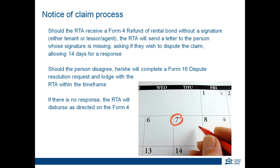The notice of claim process: if the tenant or a lessor agent has sent a refund form to the RTA without the other person's signature, we will write to them and ask whether they wish to dispute the claim. The timeframe allowed for their response is currently 14 days. It is important to make sure the RTA has your current address, email and phone details, so if you move or your staff changes, ensure the RTA is always informed. If you do not know the tenant's forwarding address but have a phone number or email, put those details on the form. If the person disagrees, they will need to complete a Form 16, a dispute resolution request, and lodge that with the RTA within the notice of claim timeframe. Once we receive the form, the RTA will continue to hold the bond until the matter is resolved or an order is made from the Tribunal. If there is no response, the RTA will disperse the bond money according to what was received on the original Form 4.